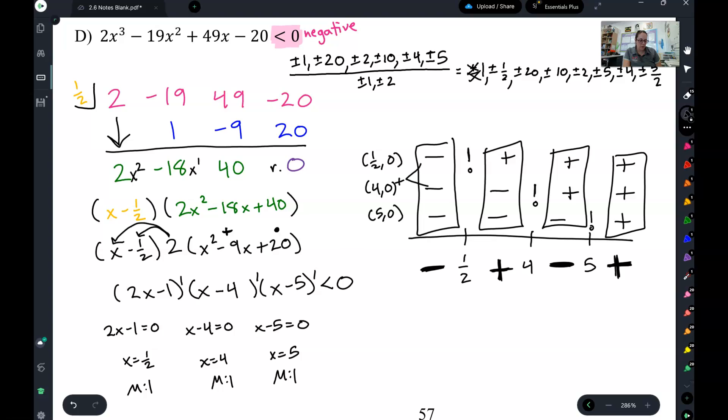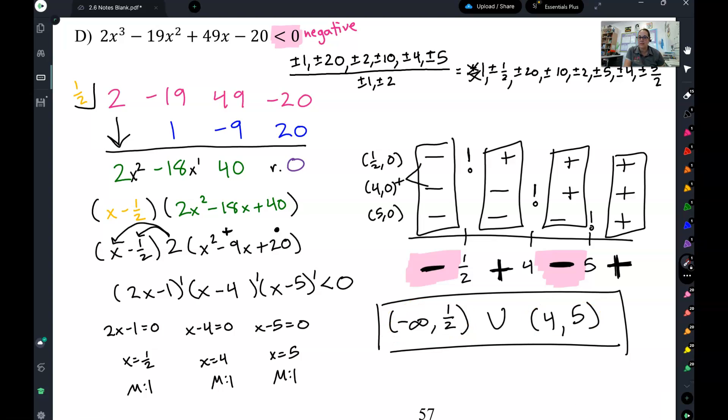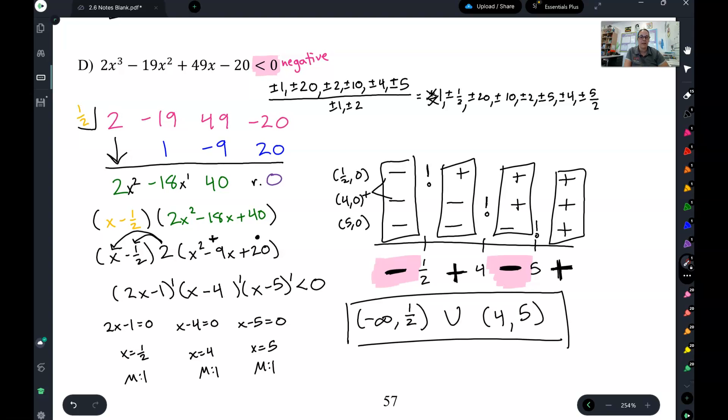So let's remind us what we're looking for. We wanted less than 0, our negative sections. So that's that section and that section. So I have from negative infinity up to one half parentheses because I am not equal to and union from 4 to 5. Those are my negative sections. So those will be the pieces of the graph that are below the x axis or negative. That's our final answer.